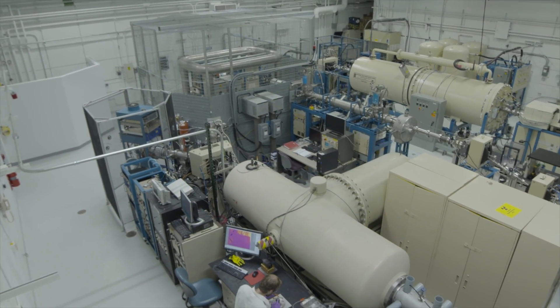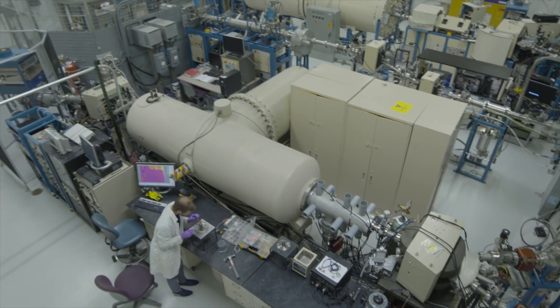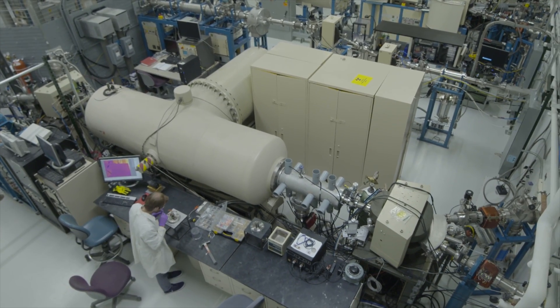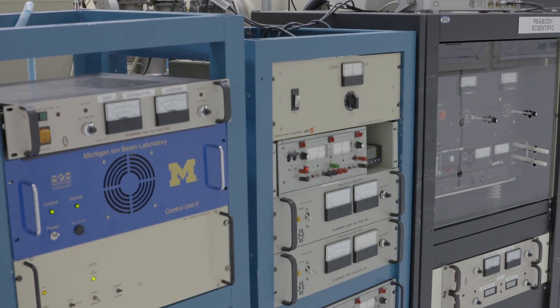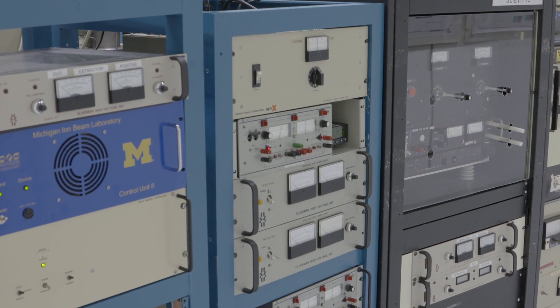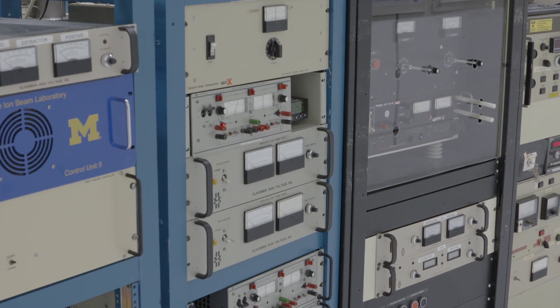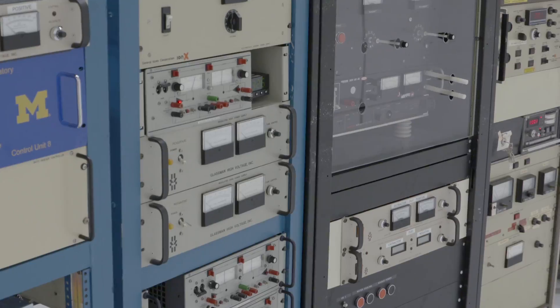Maze is a solid state accelerator with a terminal voltage of 1.7MV. The accelerator is equipped with an analyzing magnet, an electrostatic quadrupole magnet, and is coupled to beam lines. Two sources are available: a sputter source and an electron-cyclotron source.